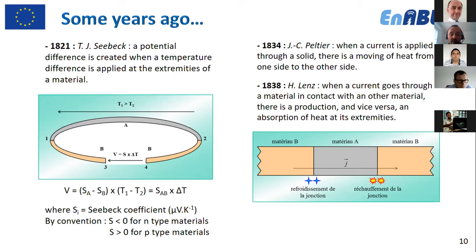The Seebeck coefficient is negative for n-type materials and positive for p-type materials. A few years later, Peltier discovered the opposite effect, though he gave a wrong definition. The accurate definition was provided by Lenz four years later: when a current passes through a material in contact with another material, there is a production and absorption of heat at its extremities.